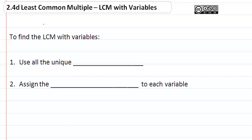2.4d, least common multiple, LCM with variables. To find the LCM with variables, we want to use all the unique factors, just like when dealing with numbers, and assign the highest exponent to each variable.